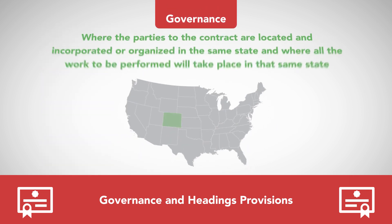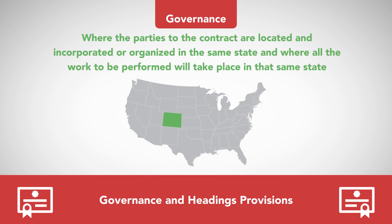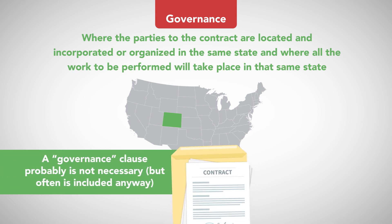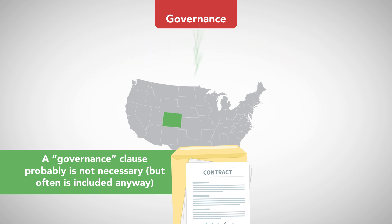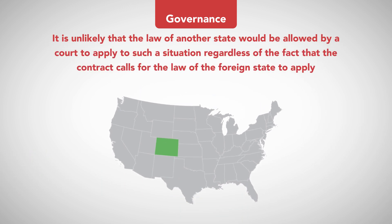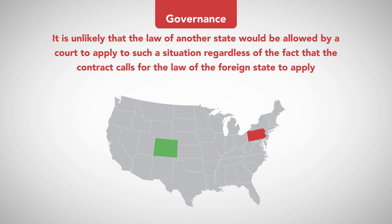Governance. Where the parties to the contract are located and incorporated or organized in the same state, and where all the work to be performed will take place in that same state, a governance clause probably is not necessary, but often is included anyway. It simply states that the law of that state will apply to the contract, which it very likely does anyway. It is unlikely that the law of another state would be allowed by a court to apply to such a situation, regardless of the fact that the contract calls for the law of the foreign state to apply.